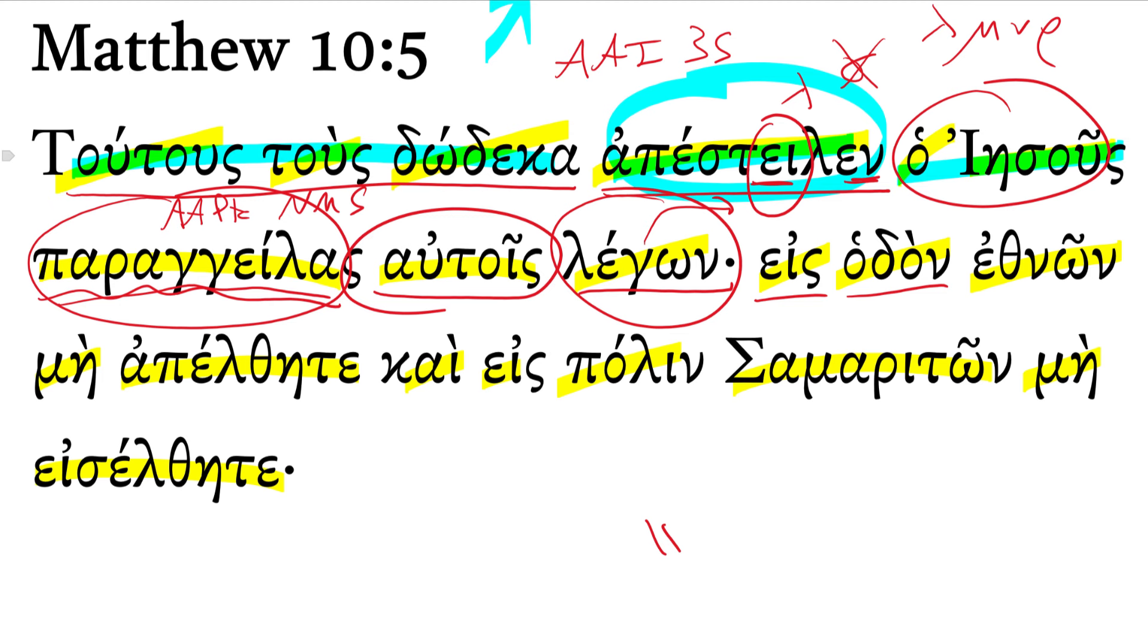Saying, there's our redundant or pleonastic participle used to introduce speech, almost like a quotation mark. Jesus said to them, into the way of the Gentiles do not go, do not go forth, and into a city of the Samaritans do not enter. We'll note here...